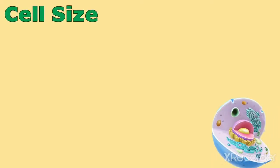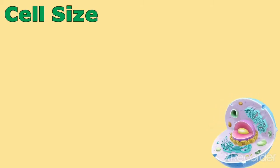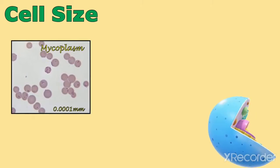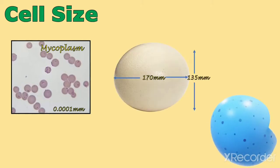Cell size. The size of cell varies in different organisms. The smallest cells are of mycoplasm, i.e. 0.0001 mm, while the largest animal cell is the ostrich egg.